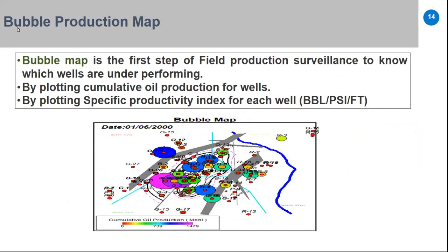Another diagnostic tool is the production bubble map, which is the first step in field production surveillance to identify underperforming wells. Wells are plotted as bubbles representing cumulative oil production — the larger the bubble, the greater the production. Small bubbles like an orange one indicate low cumulative production, suggesting the well may have a problem. We can also plot specific productivity index in barrels per day per foot to identify wells with low productivity.